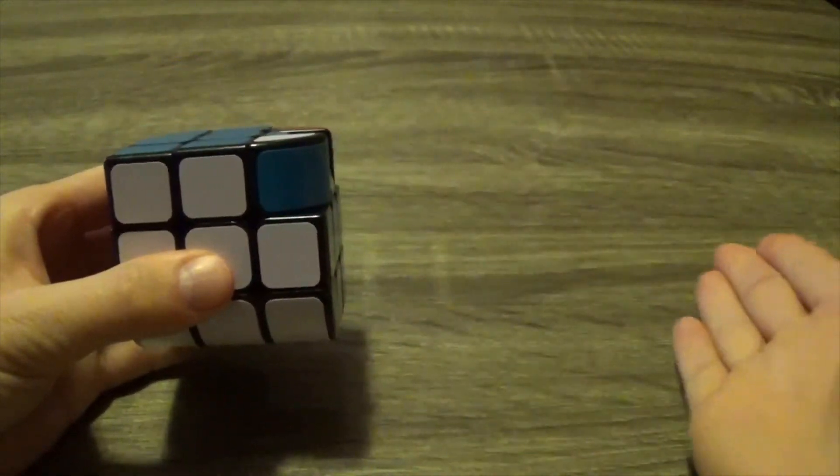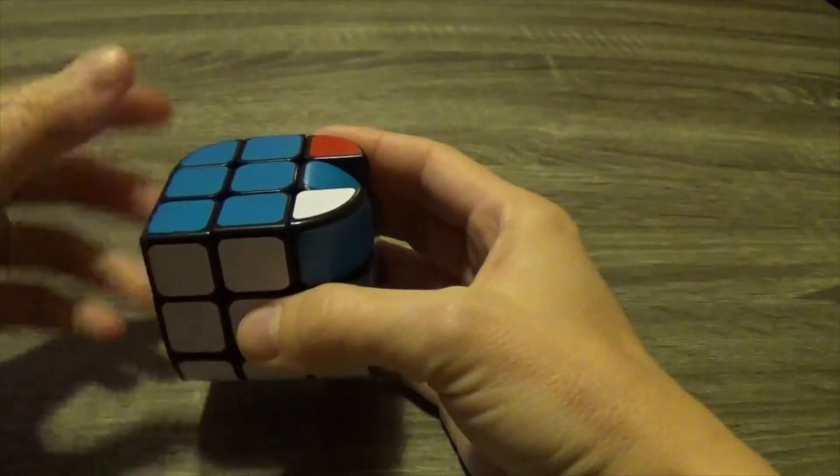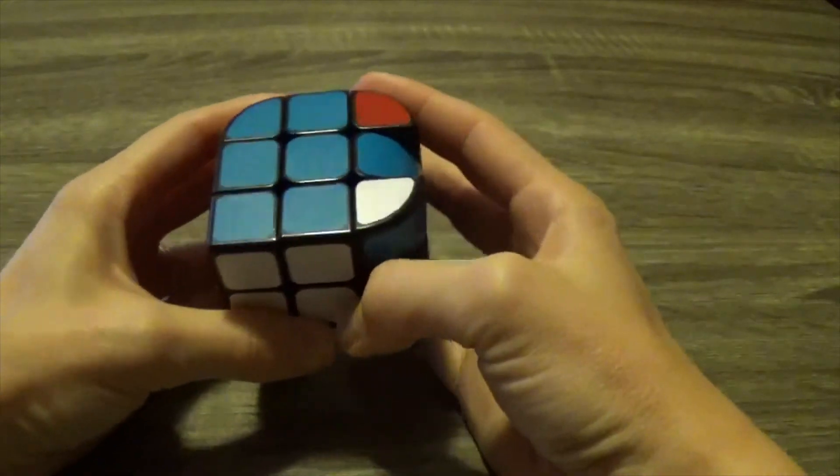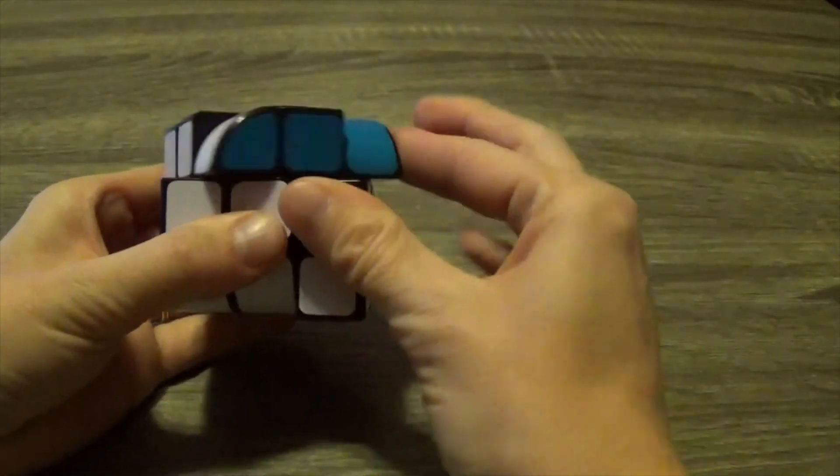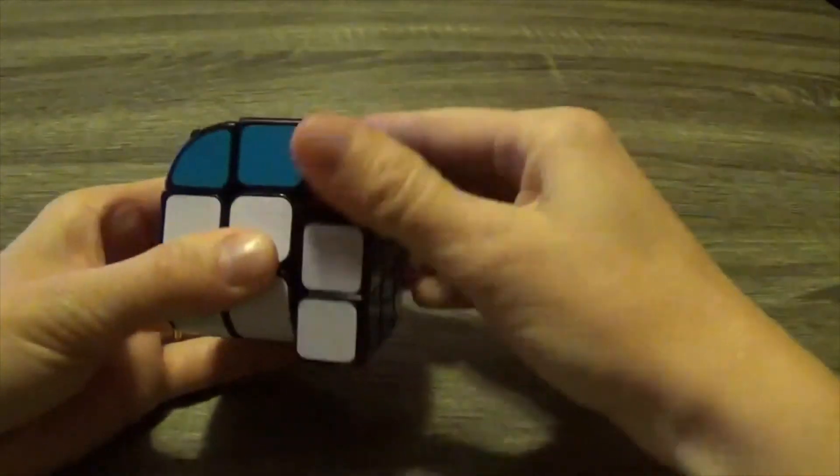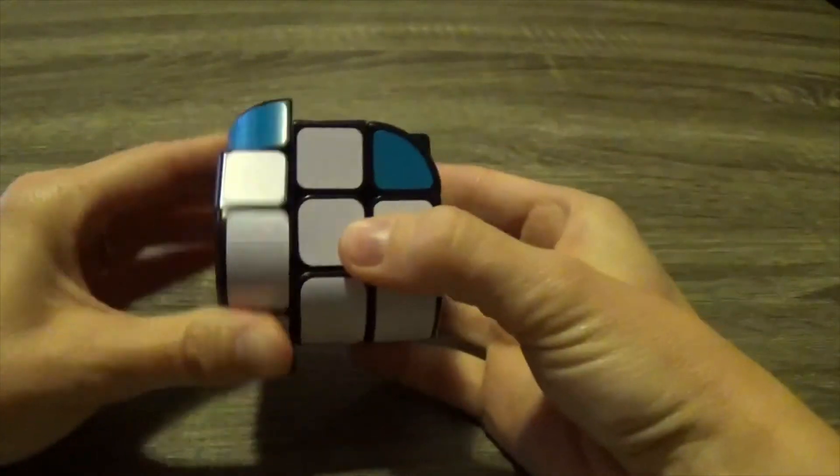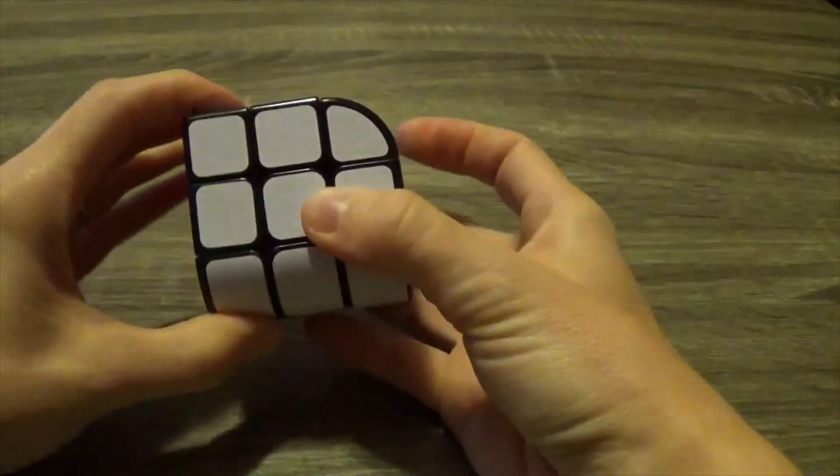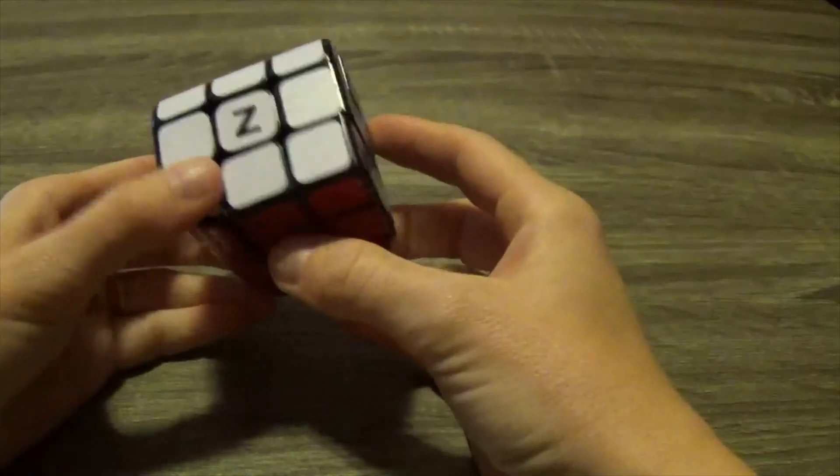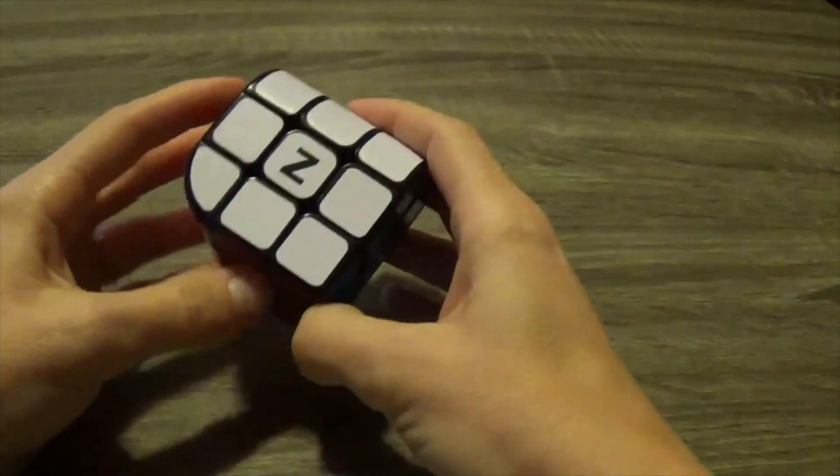I'm going to face this to the right. If these were mixed up, you would just do this move multiple times like a standard three by three. So right side and that is the Penrose cube.